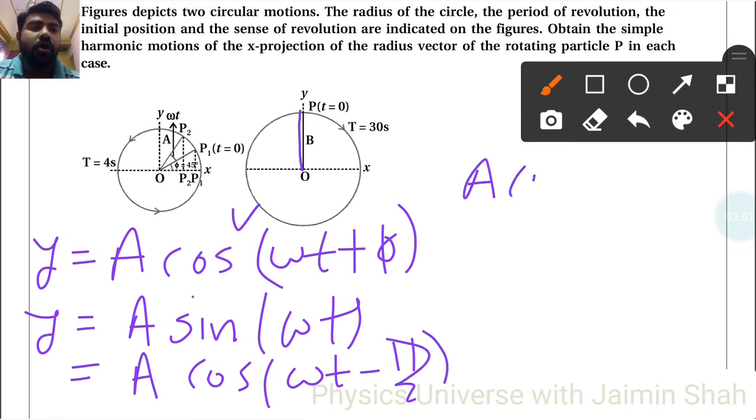So A cos omega 2π upon t into t minus π by 2 here. So is equal to A cos, now t is 30, so I can write π upon 15 into t minus π by 2.